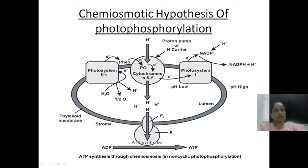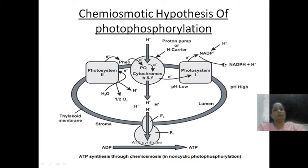In the thylakoid membrane we have: photosystem 2, cytochrome B and F, and photosystem 1. When we talk about the outer part of this membrane, the NADP reductase enzyme is associated with the outer part of this membrane.